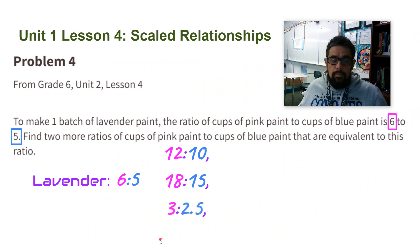I can do half of it. Half of 6 is 3, half of 5 is 2.5. Three parts pink to two and a half parts blue is going to give me the same lavender.